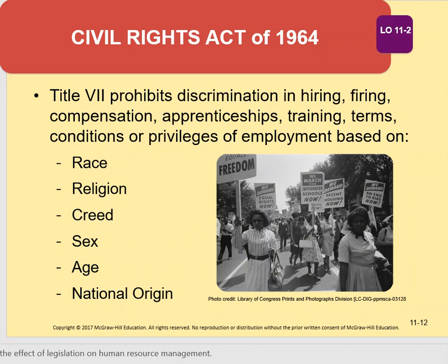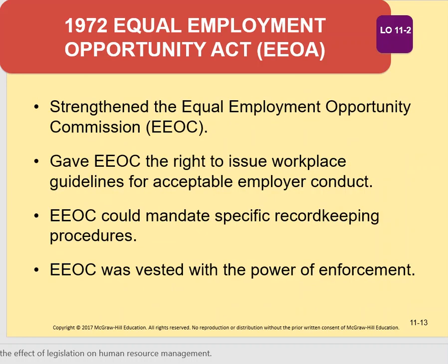A company with five employees does not have to follow Title VII of the 1964 Civil Rights Act. Eight years later, in 1972, Congress passed the Equal Employment Opportunity Act, or the EEOA. This strengthened the already existing Equal Employment Opportunity Commission, which came out of the 1964 Civil Rights Act, providing further guidelines on the 1964 Act.